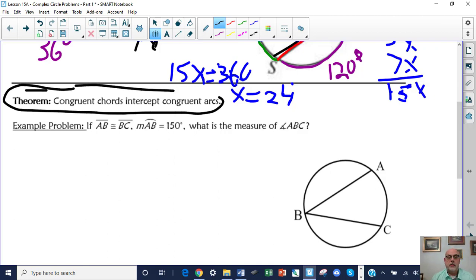So in this example, you're told that AB and CB are congruent. Therefore, arc AB and arc BC are congruent. That's important. Congruent chords intercept congruent arcs.